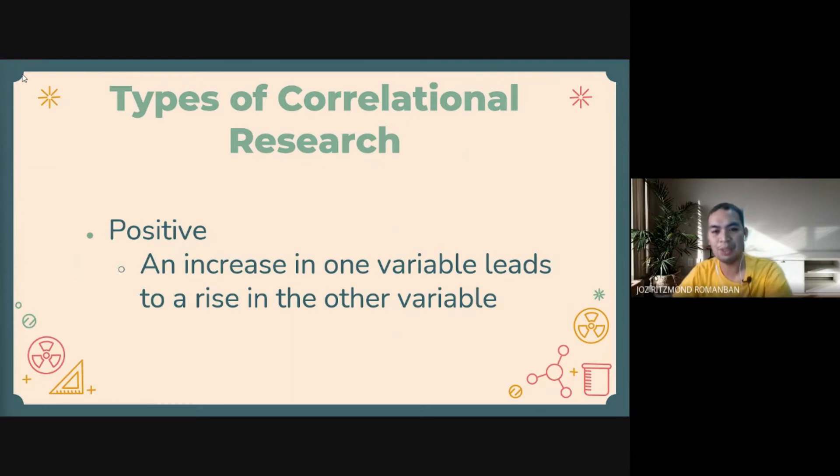First, when we say positive correlational research or positive correlation, there is an increase in one variable leading to a rise in the other variable. This means there is a direct correlation or direct relationship between the two variables. For example, if we have height and weight, as height increases, the weight also increases.